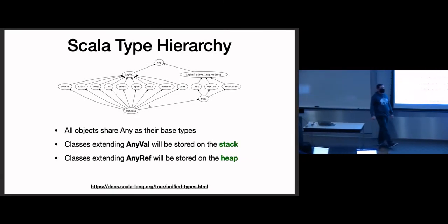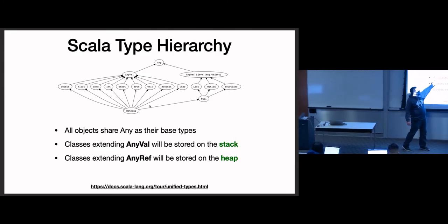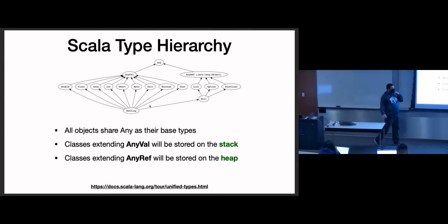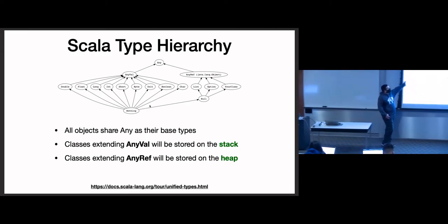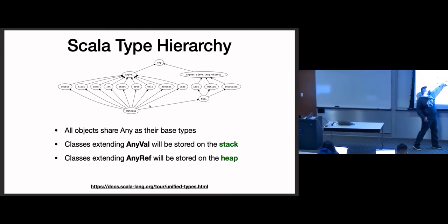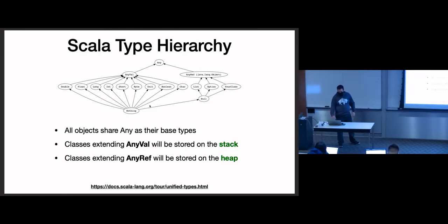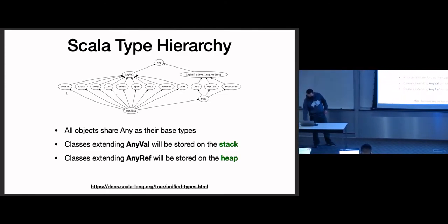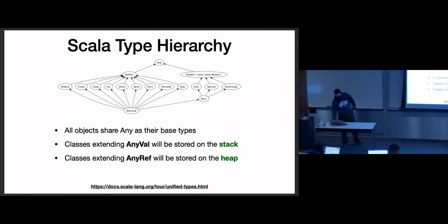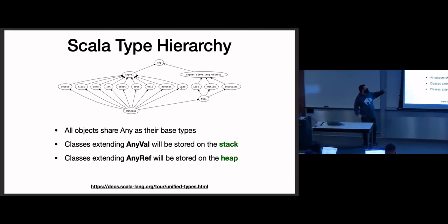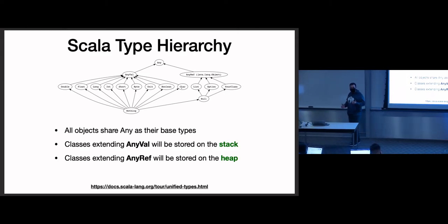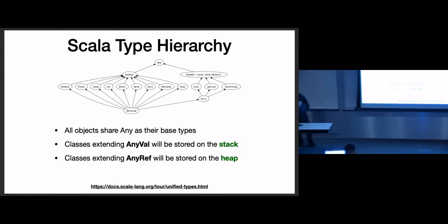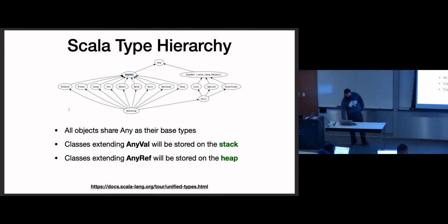I'm going to hit you with this kind of scary chart right off the bat. We're going to learn what this means over the next four-ish lectures. What this is, is the type hierarchy in Scala, and all these arrows mean that each type inherits another type. All these values that I called primitives — and we did add string to that list, though strings technically work really strange — all these ones that inherit from AnyVal are the ones I've been calling primitives.